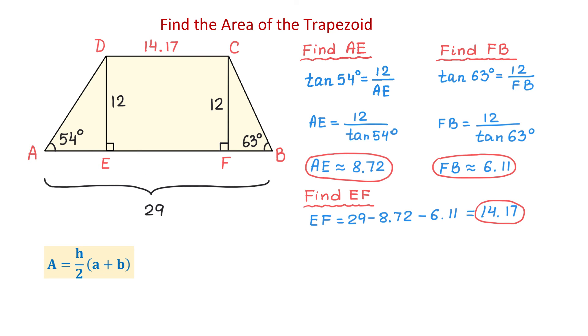And now, we have the lower base, the upper base, and the height, and we can find the area. Then, the area equals the height, 12, divided by 2, multiplied by the sum of 29 and 14.17. Then, the area will be equal to 259.02 square units.